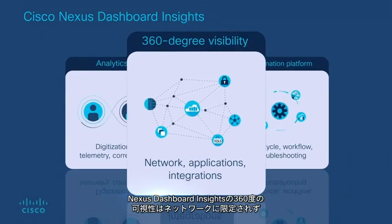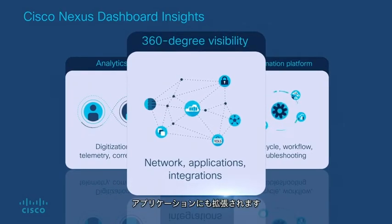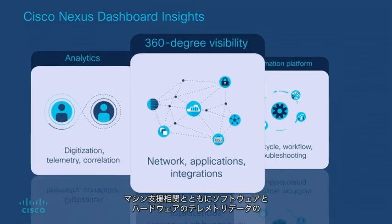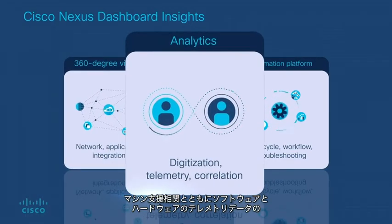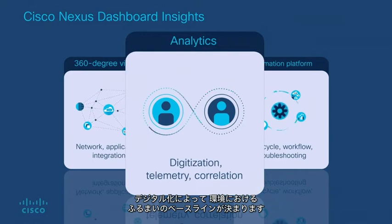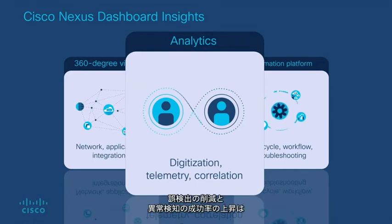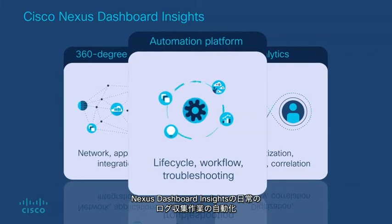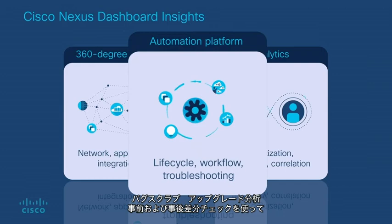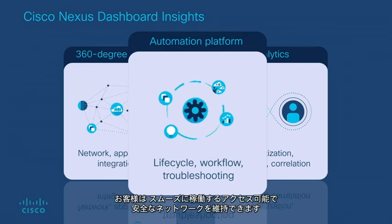Nexus Dashboard Insights' 360-degree visibility is not limited to the network but also extends to applications, digitization of software and hardware. Telemetry data along with machine-assisted correlation determines the baseline behavior of the environment, reducing false positives and increasing successful anomaly detection. Automation of mundane jobs such as log collection, bug scrubs, upgrade analysis, and pre- and post-diff checks helps customers maintain a network that is running smoothly.